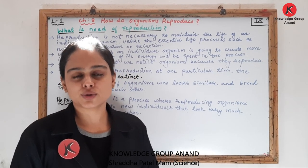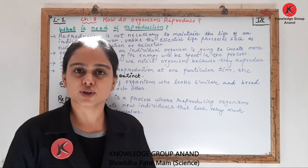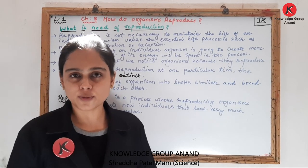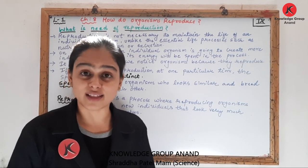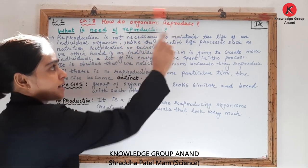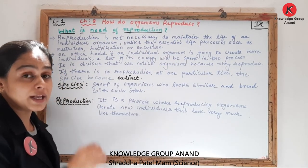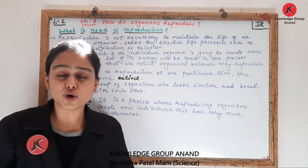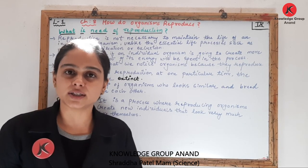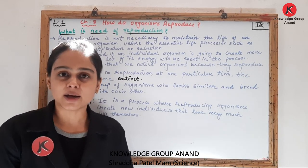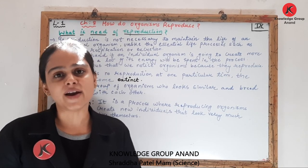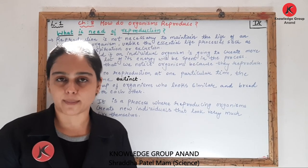I am going to take one more chapter of your science, to be more specific, the biology portion, and that is chapter number 8: How do organisms reproduce? Now before starting this chapter in detail, let me introduce the topics that we are going to cover in this chapter.